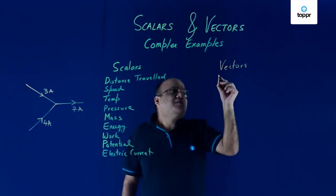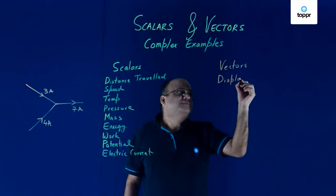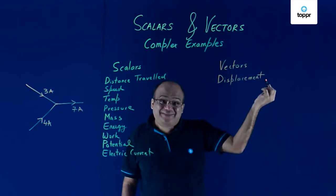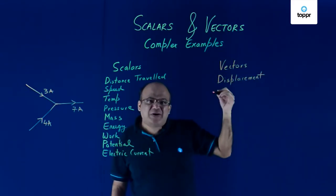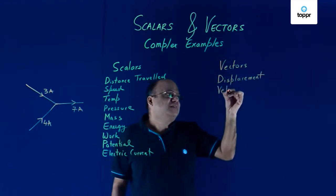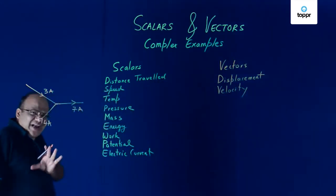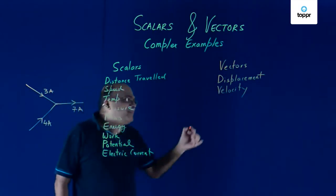So we start with displacement. Displacement is the first vector that we can think of. Displacement per unit time is velocity. Velocity is also a vector. Rate of change of velocity is acceleration.